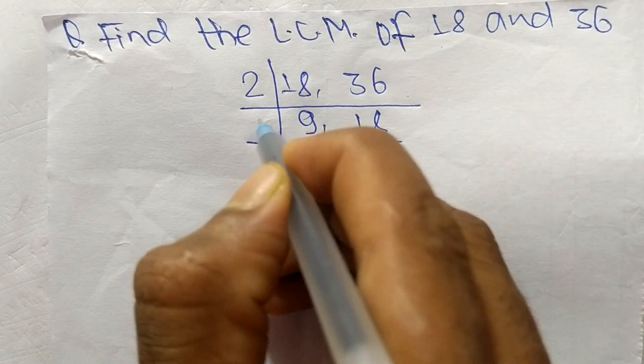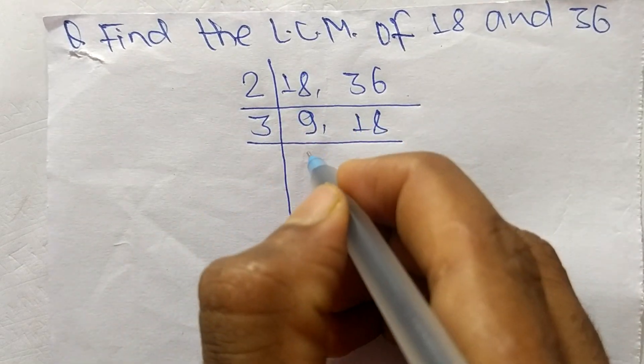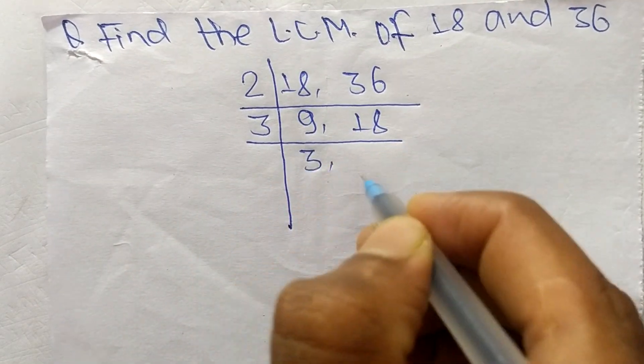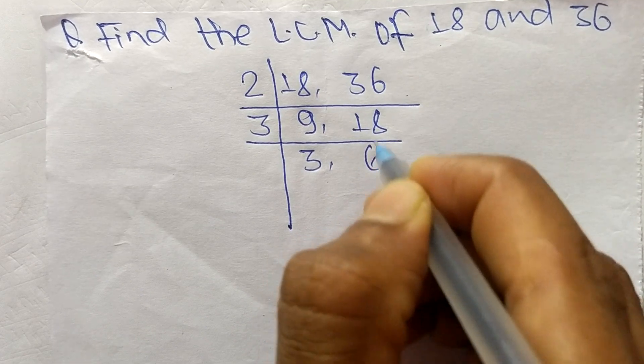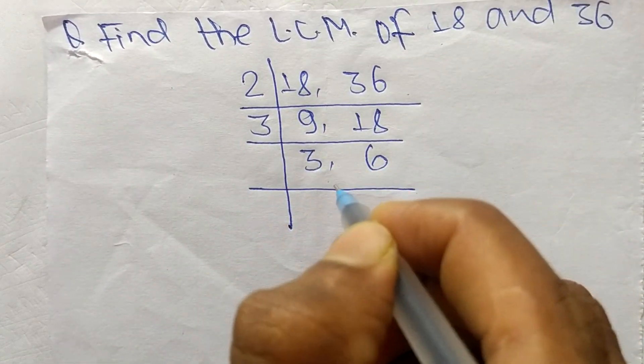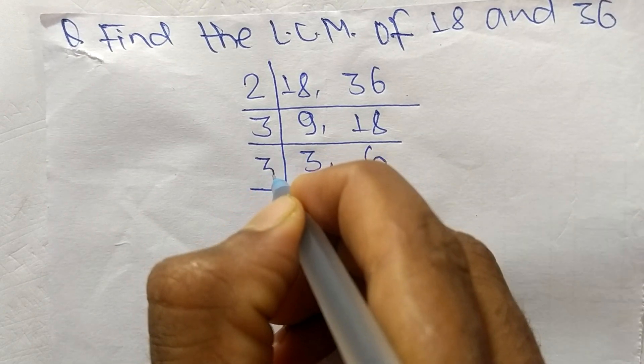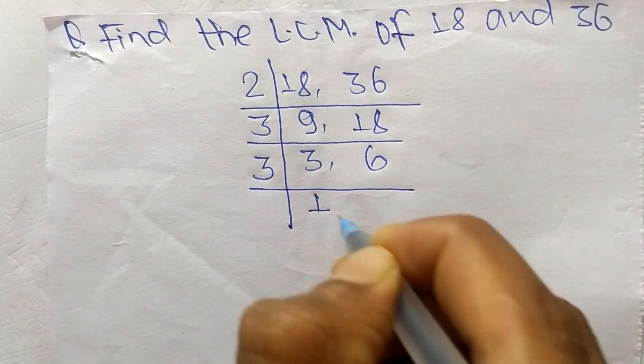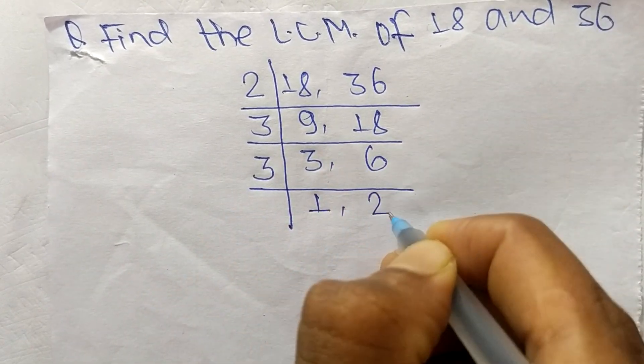The number is 3. So 3 times 3 means 9, and 3 times 6 means 18. Again, these numbers are divisible by 3. So 3 times 1 means 3, and 3 times 2 means 6.